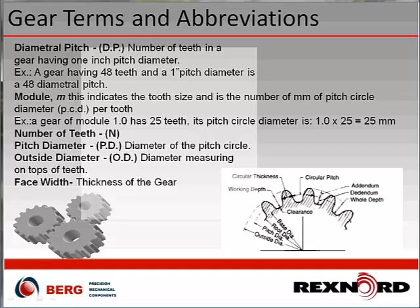Another term is module — the metric equivalent of diametral pitch. When you talk about module, you're mostly talking about a metric gear application. Key dimensions include number of teeth, pitch diameter, OD, and face width of a gear. These are all critical dimensions when determining what type of gear you're looking for.